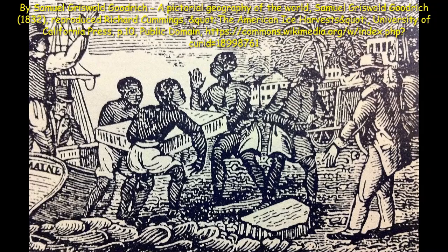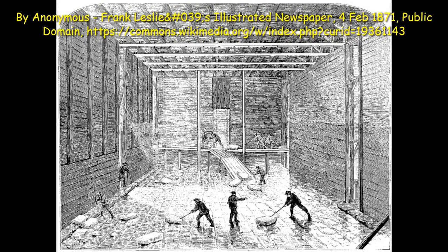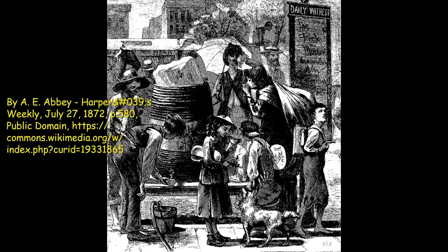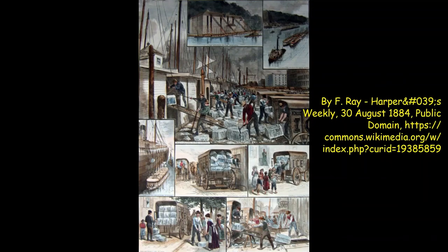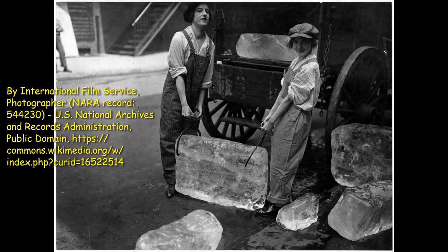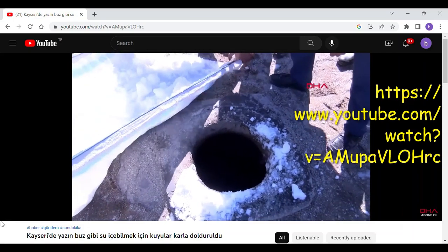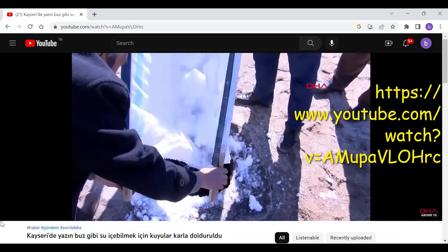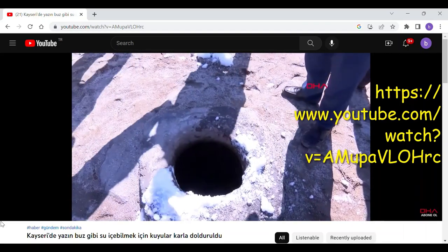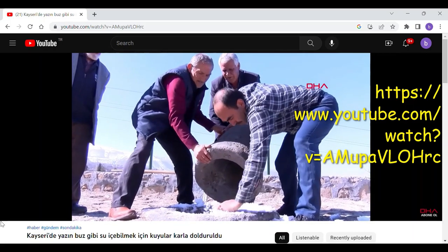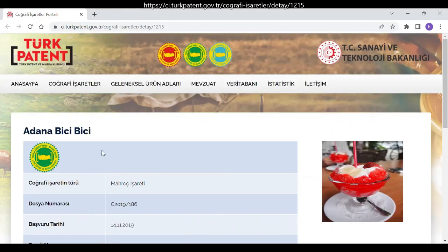Before refrigerators became so widely used, the ice trade was an important sector. Until the early 20th century, ice was cut from lakes and shipped to many places of the world to be used in the meat, vegetable, and fish sectors, facilitating the spread of new food products throughout the world. There are still traditional uses of ice and snow in Turkey. In some rural places, snow is collected from mountains and deposited in big pits. In summer, these snow deposits are used as a water source and for making cold drinks and desserts. Some of these desserts have been designated as geographical indications, such as Nazilli snow halwa and Adana Bici Bici desserts.